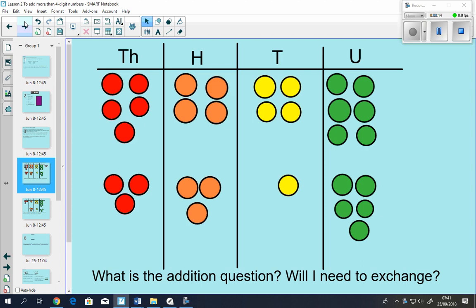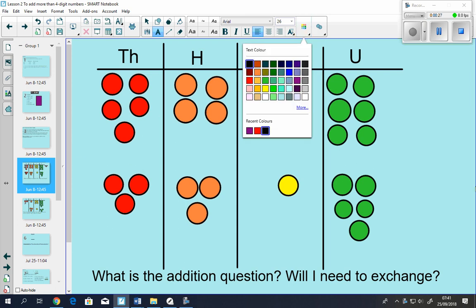Okay, so here we have some counters and place value columns. And the first thing we want to figure out is what is the addition question. So what numbers do we have shown here? Well, it's a lot easier to have a look at this if you consider that there's an invisible line here.